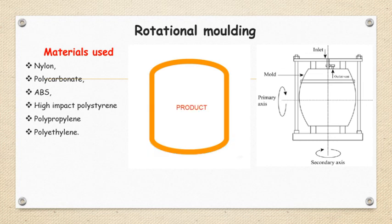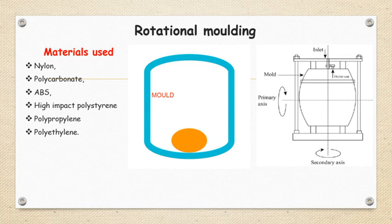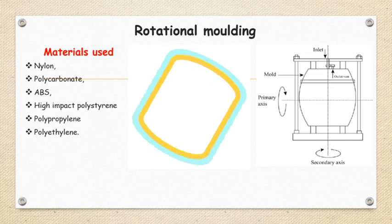You can see this through this diagram. Primary axis and secondary axis - it is rotated about both axes and you can get the component of exact shape and size of this mold cavity. The materials preferred for this rotational molding are nylon, ABS, polycarbonate, high impact polystyrene, polypropylene, and polyethylene.